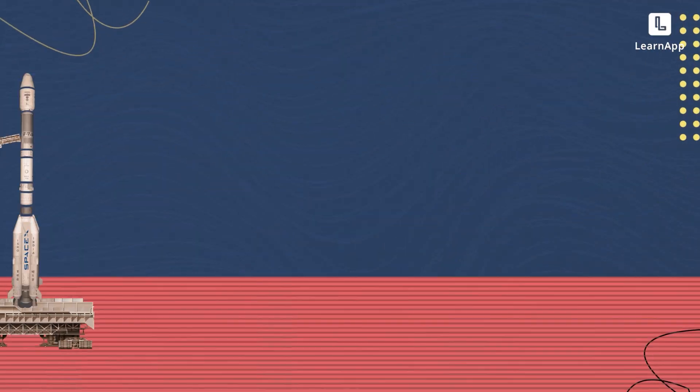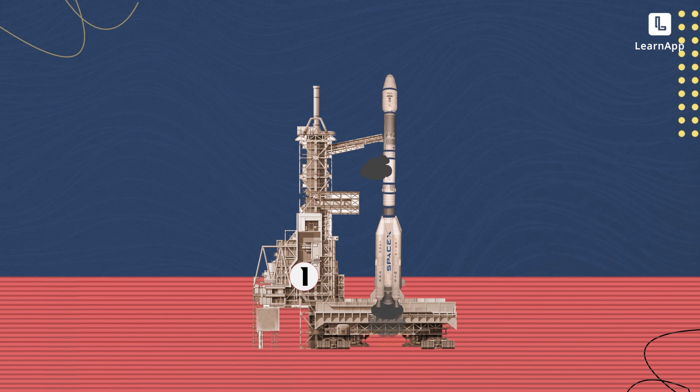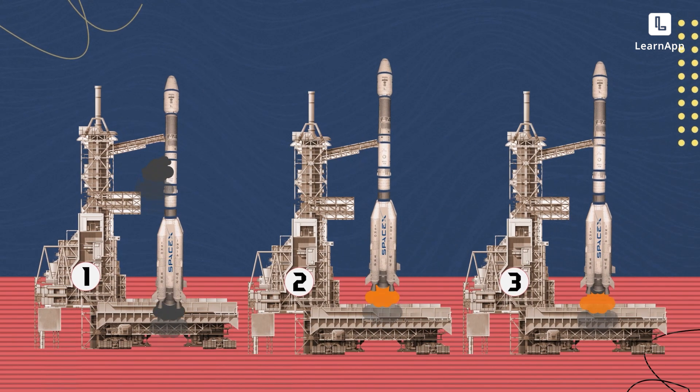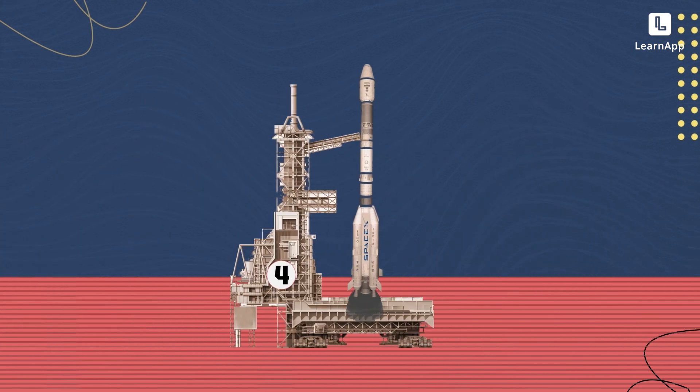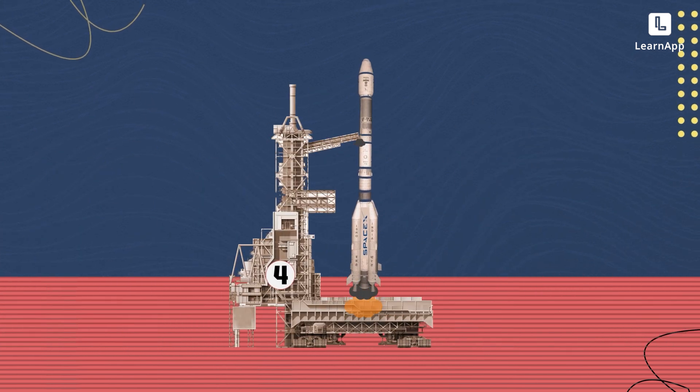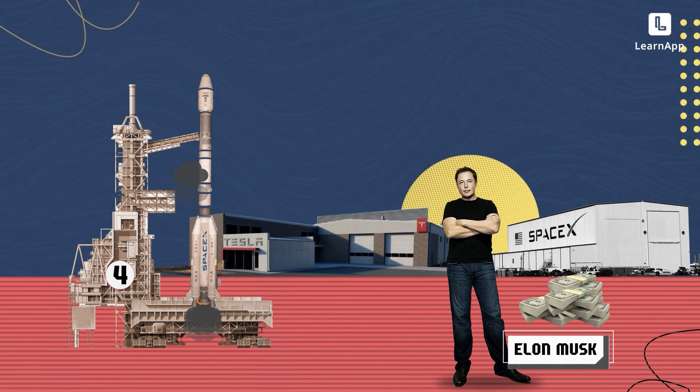SpaceX was ambitious, to say the least. Even today we think, who is making a rocket as an individual? And as crazy as it sounds, it was worse when he put it into practice. The first three rockets failed, and the story goes that if the fourth rocket also busted and did not take off, he would have lost his entire fortune.